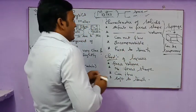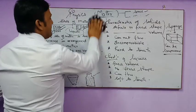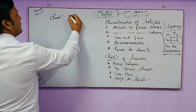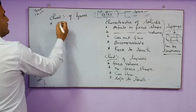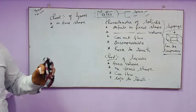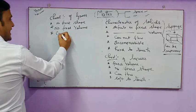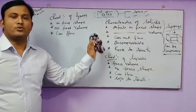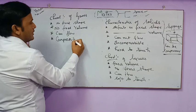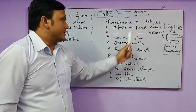Coming back to the characteristics of gases: first, gases have no fixed shape. Second, they have no fixed volume. Third, gases can also flow from one place to another — much more freely than liquids. Fourth, gases are compressible. These are the key characteristics of gases.